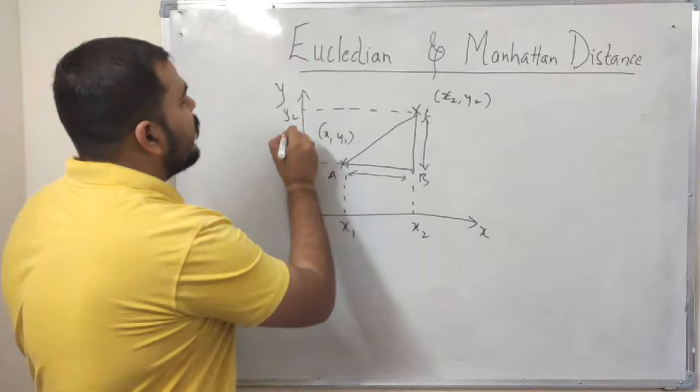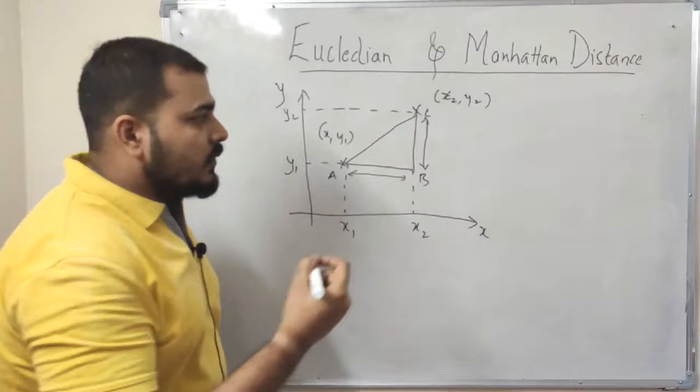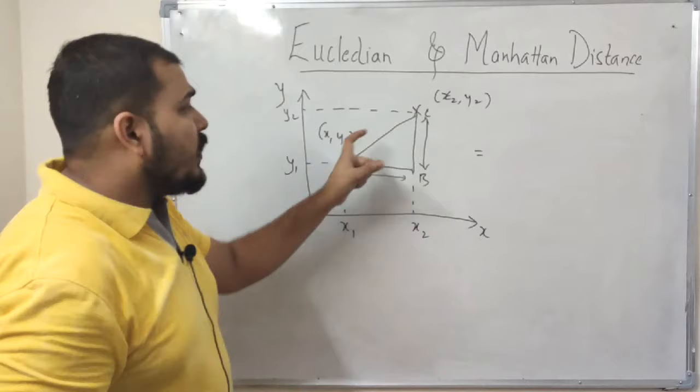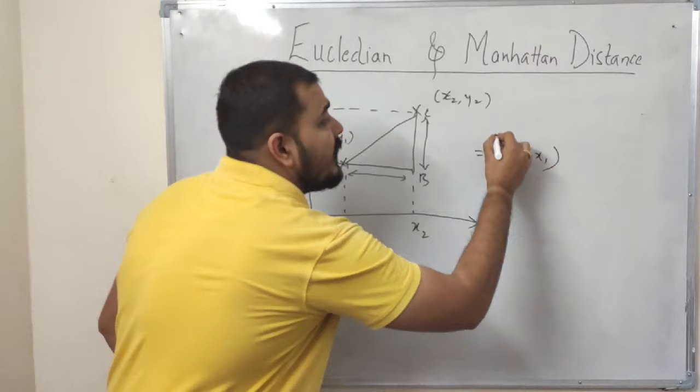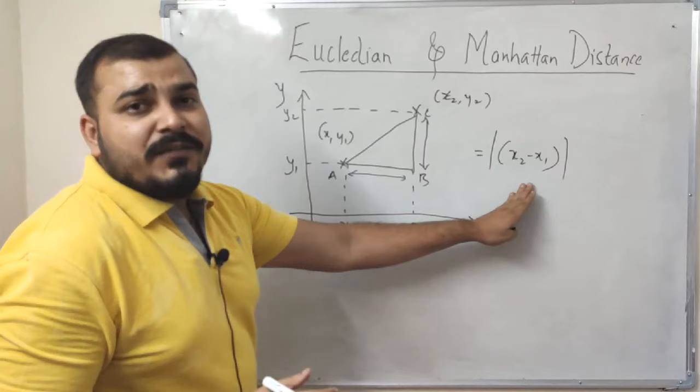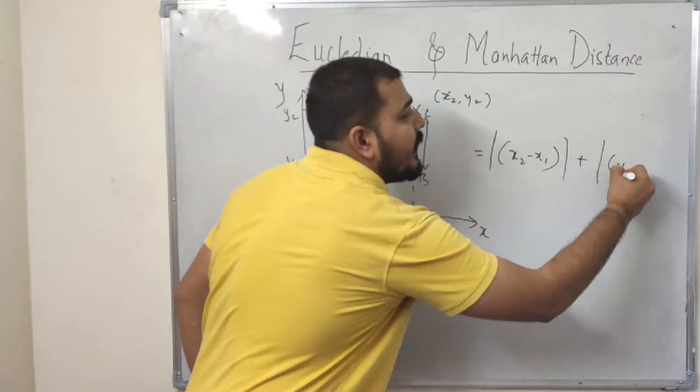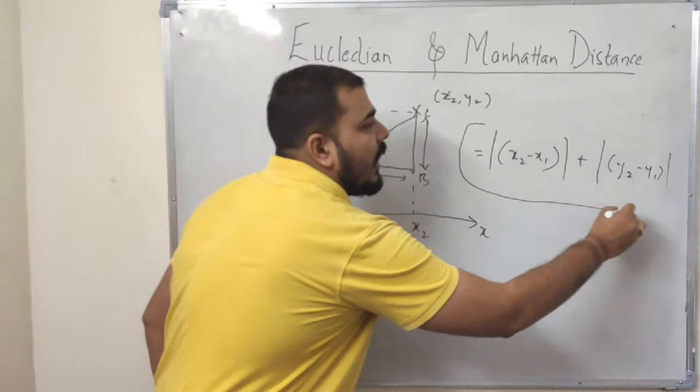Now according to Manhattan distance, the best way to calculate the formula is basically combining this and this. If I want to combine this and this, I will just say that this is nothing but x2 minus x1 absolute term—absolute term basically means that whether this is positive or negative it will always become positive—then plus the absolute of y2 minus y1.